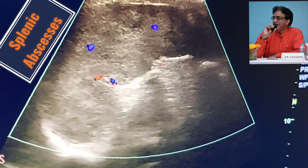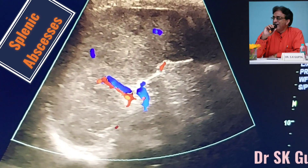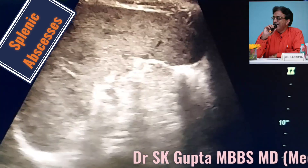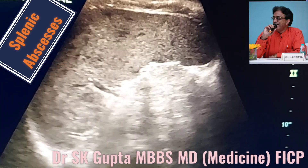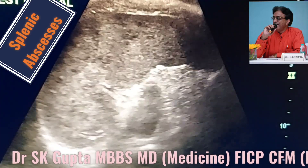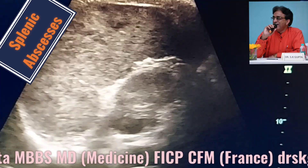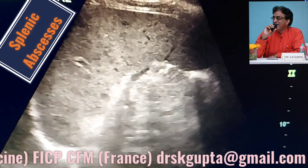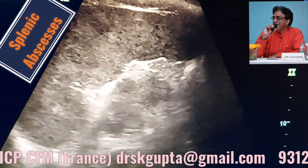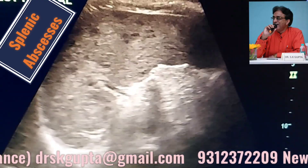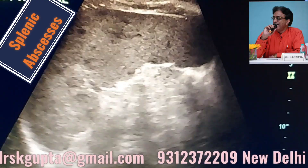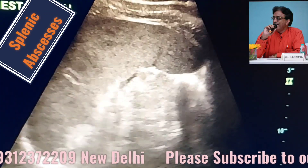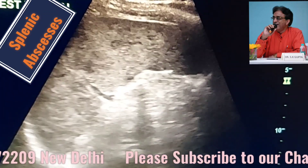Splenic abscesses are pretty rare because the spleen has a wonderful reticuloendothelial system with good phagocytosis. However, sometimes in patients who have immunocompromised states or in patients with leukemia, splenic abscesses can be seen, and they should always be kept in the differential diagnosis of pyrexia of unknown origin.